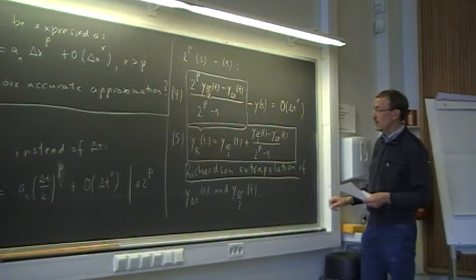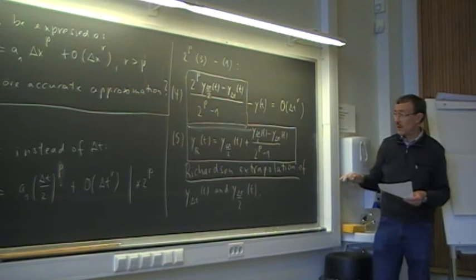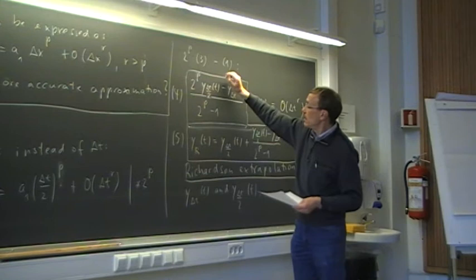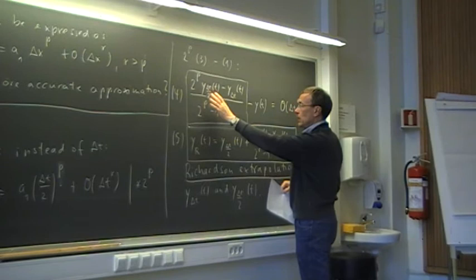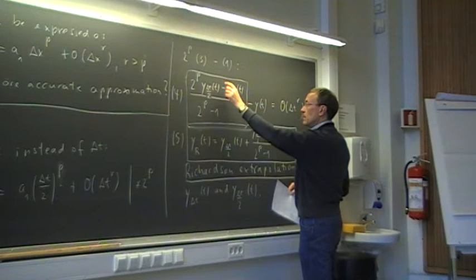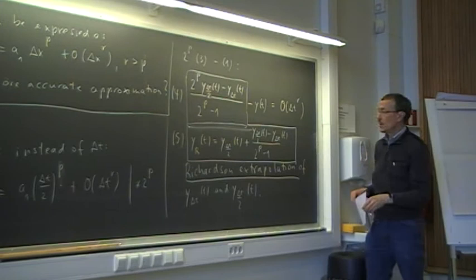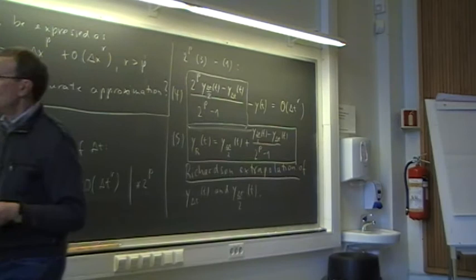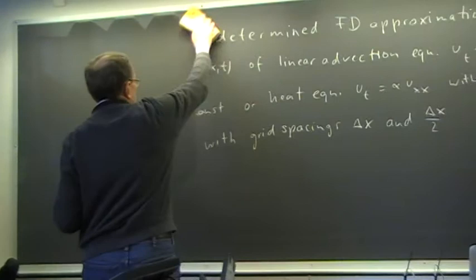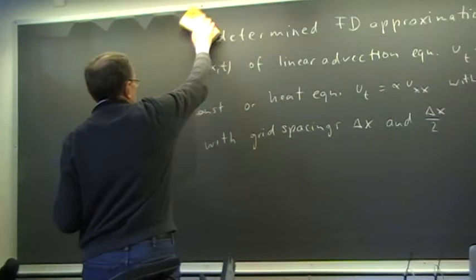What does that mean? It means that we, in a sense, extrapolate from knowing the solution with time step delta t and delta t half, to the case when delta t is 0. We can illustrate that by expressing everything as a function of the time step delta t. Our error formula gives a curve — say quadratic — and we have two values: y_{delta t}(t) at delta t, and y_{delta t/2}(t) at delta t/2. We know the error goes to zero, so at delta t = 0 we get very close to the exact solution.